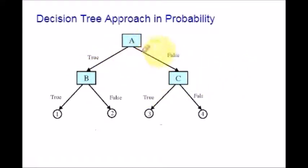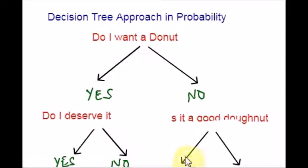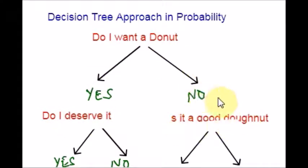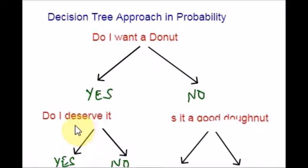For example, let me give you a simple real-life example. Do I want a donut? What are the two options you will get? Either yes or no. If you want to choose one, you deserve it. If you don't want it, you check whether it is a good donut or not. A tree diagram will give you all possible solutions. So, in case if you want — yes — then you have two choices: whether you deserve it or not. And if you don't want it, you have to check whether it is a good donut or not.